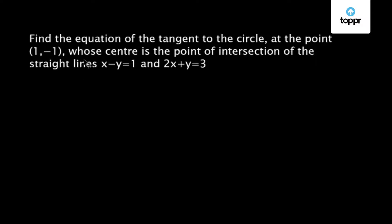Let us discuss a question on coordinate geometry which came in JEE Mains 2016. Here's the question: Find the equation of the tangent to the circle at the point (1, -1), whose centre is the point of intersection of the straight lines x minus y equal to 1 and 2x plus y equal to 3.